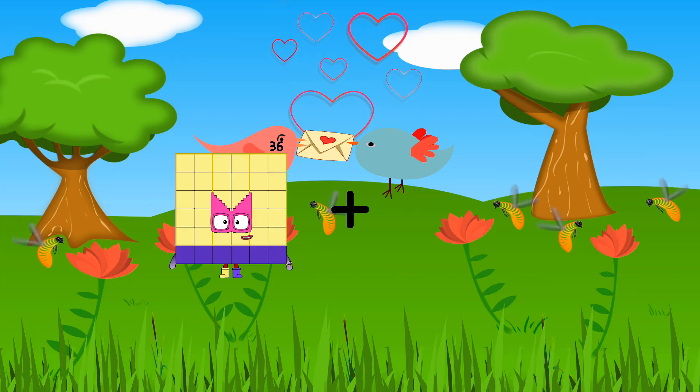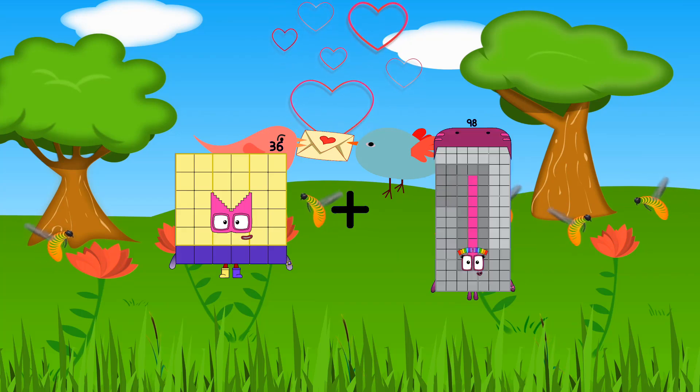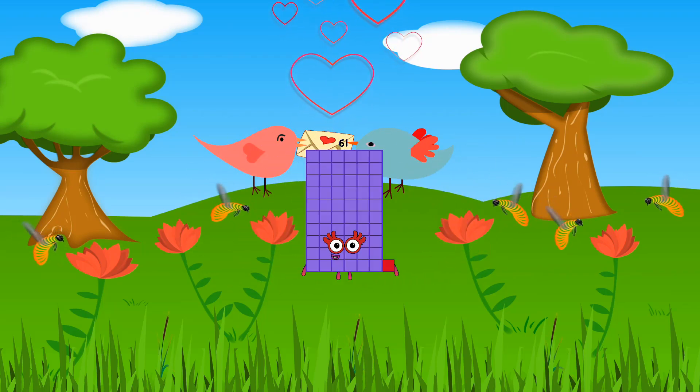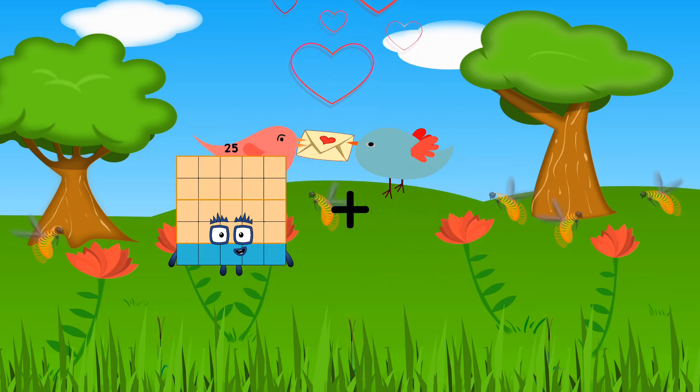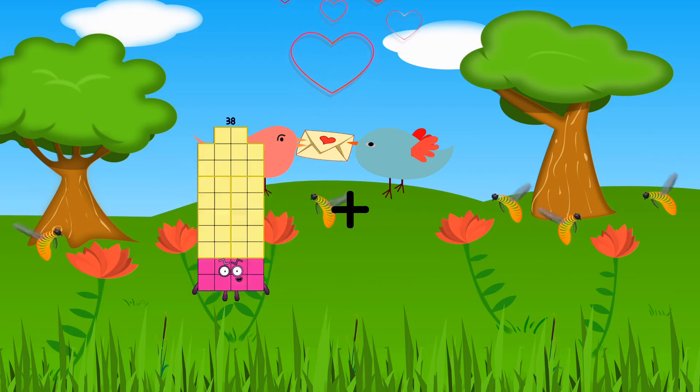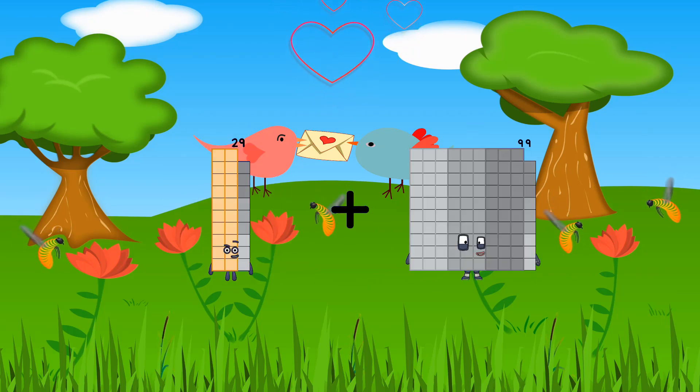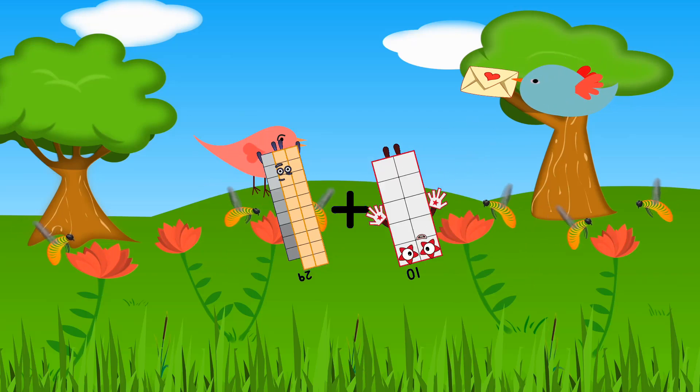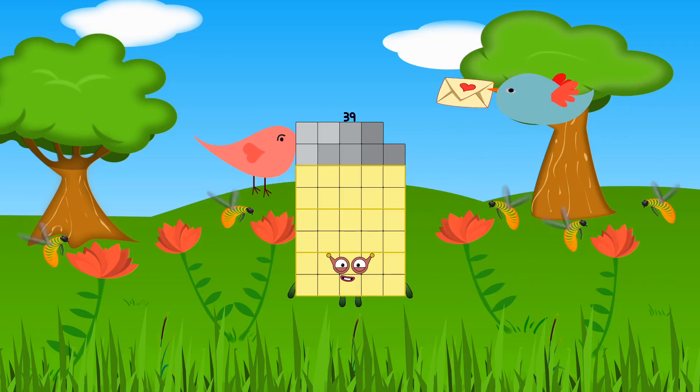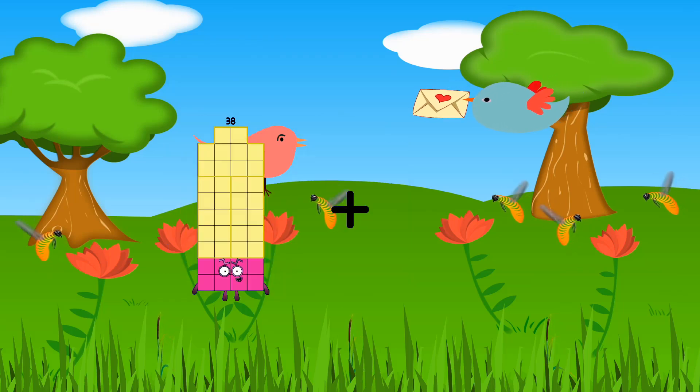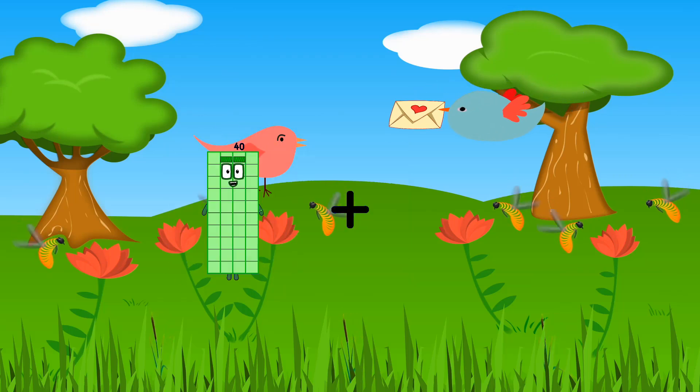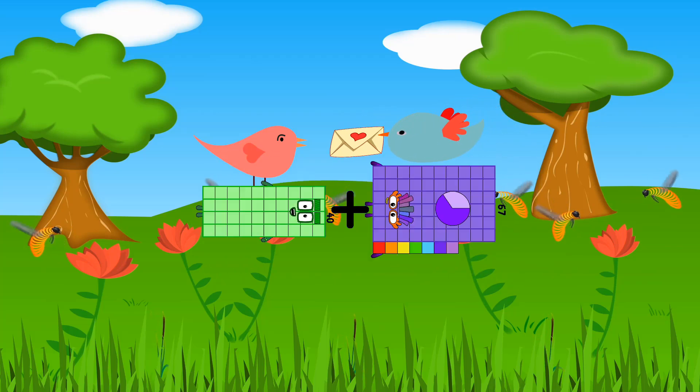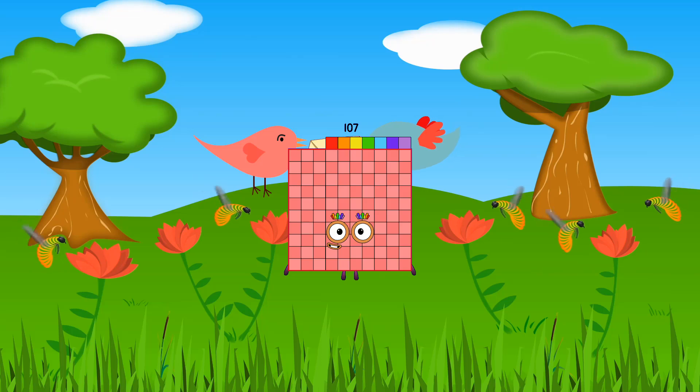36 plus 25 equals 61. 29 plus 10 equals 39. 40 plus 67 equals 107.